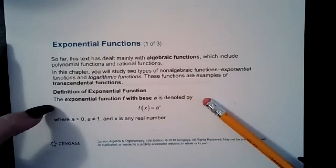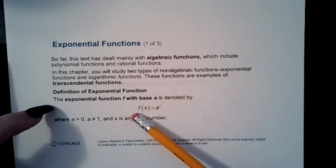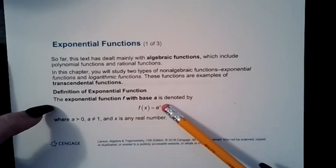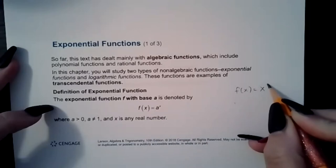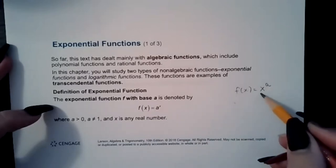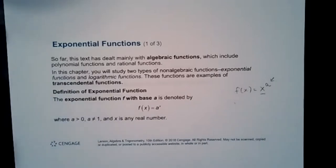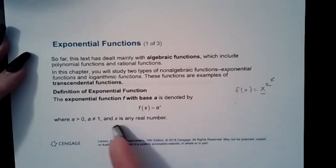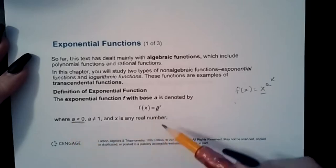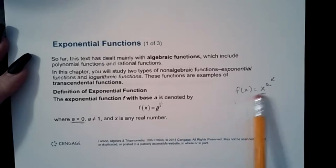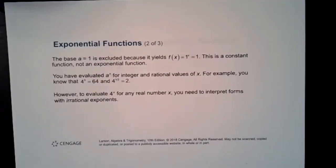The exponential function f with base a is denoted by f(x) = a^x. This is very different from polynomials where you had a number as your exponent and x as the base. Now we're swapping those base and exponent values — the base is now a given number greater than zero, and the exponent is the variable x.